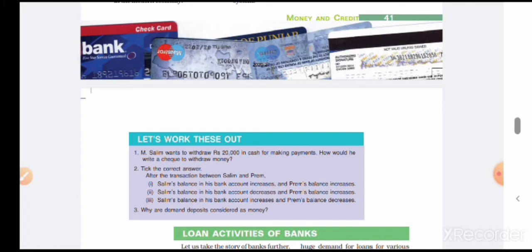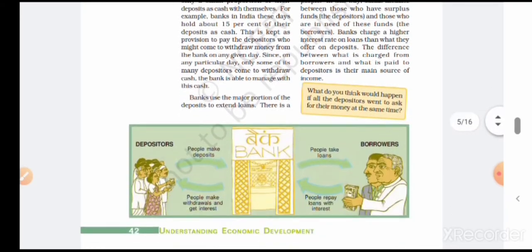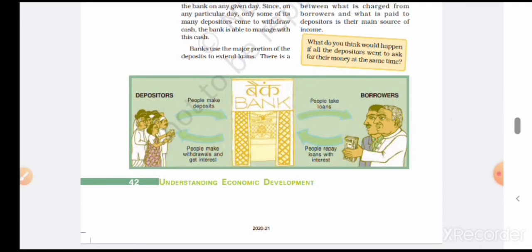Now we discuss loan activity of the bank. How does the bank get income and what are the sources? Let's see the picture given - on one side there are depositors and on the other side borrowers. Depositors go to the bank and deposit their money in their respective accounts. That amount is saved in the depositors' bank account in the form of digits, and this money is provided to borrowers.